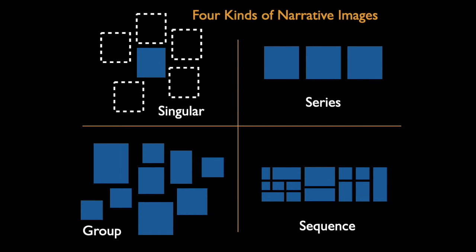There are four basic kinds of narrative modes. They are singular, group, series, and sequence.